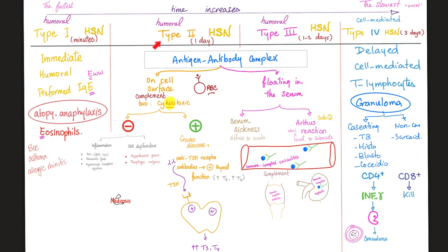Here's a quick overview of the four types. Type 1: immediate, within minutes, humoral immunity, IgE — associated with allergy, anaphylaxis, atopy, asthma, eosinophils. Type 2: cytotoxic. Type 3: immune complexes. Type 4: delayed, cell-mediated.